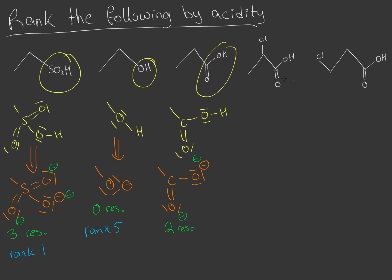The three remaining groups all have carboxyl groups, so we differentiate them by the inductive effect of chlorine. One has no chlorine, one has chlorine directly adjacent to the carboxyl group, and one has chlorine farther away. The closer the chlorine is to the carboxyl group, the stronger the inductive effect and the greater the acidity. So the chlorine adjacent ranks second, the more distant chlorine ranks third, and the plain carboxyl ranks fourth.